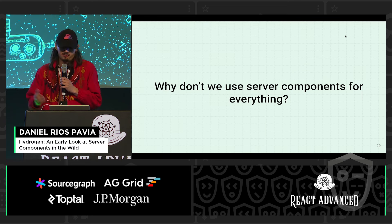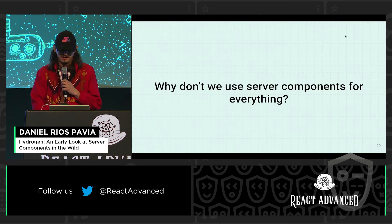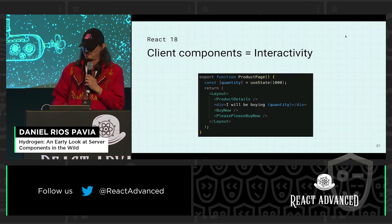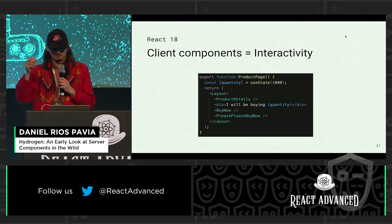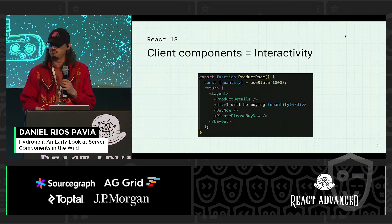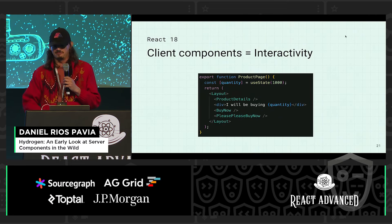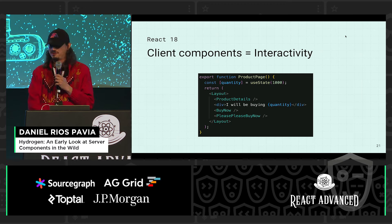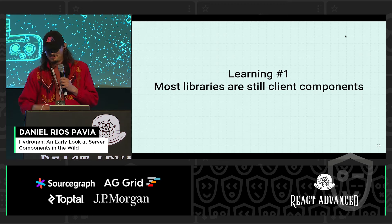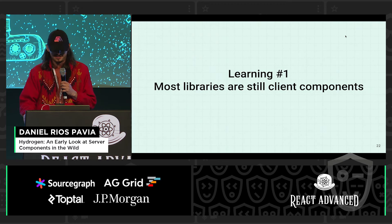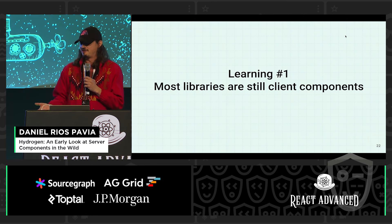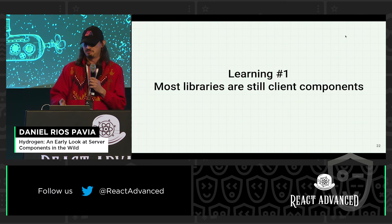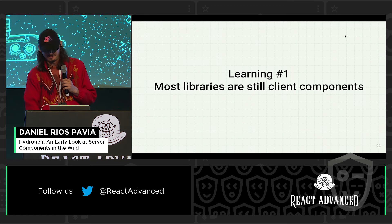So why don't we use server components for everything? Because we still need interactivity. If I want to buy a different quantity of products, I want to be able to choose that, and doing a server render for that might be too much. Some of our learnings: as we rolled out server components, not all libraries out there are compatible. That's one issue we've had.